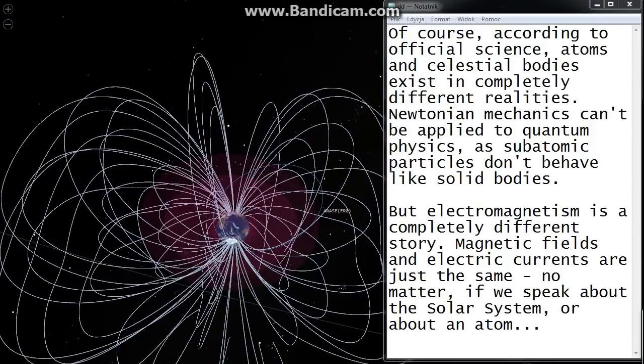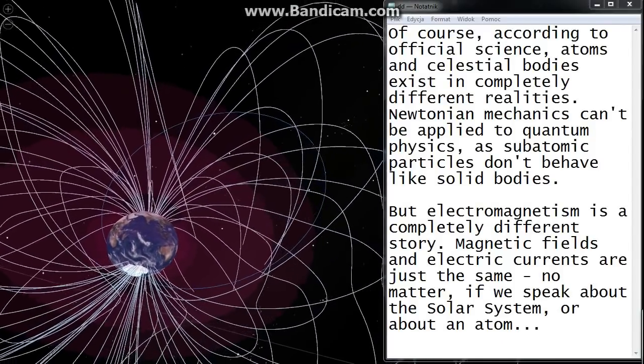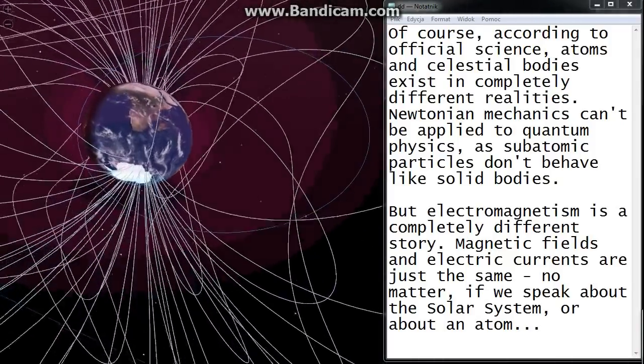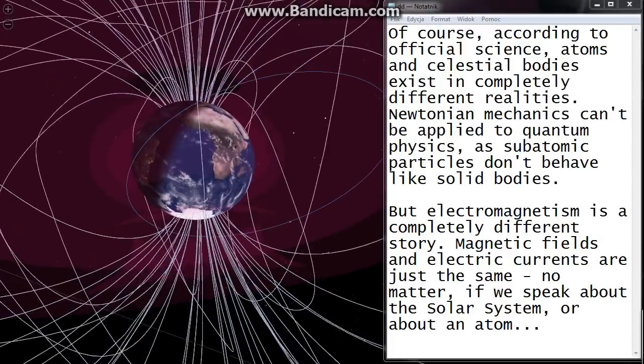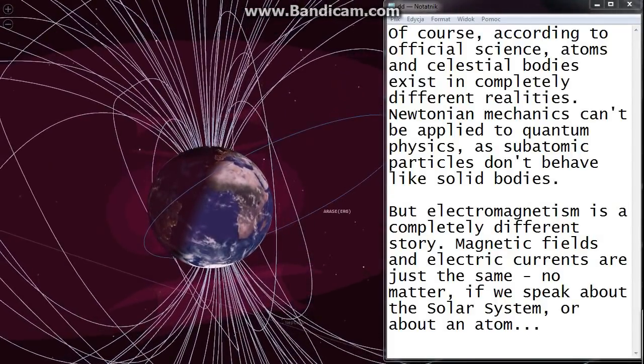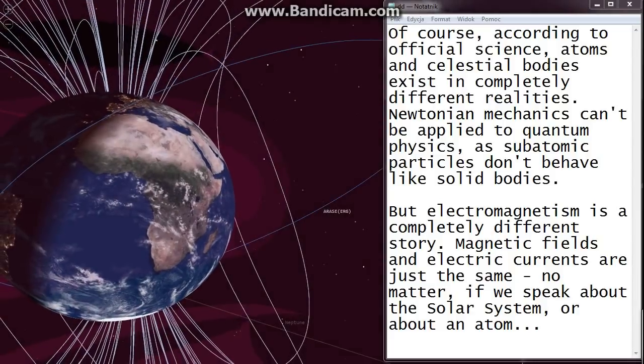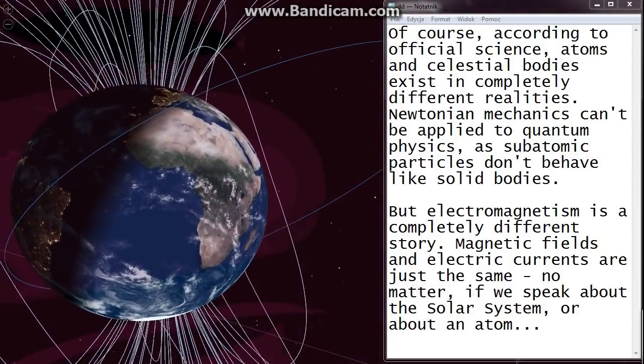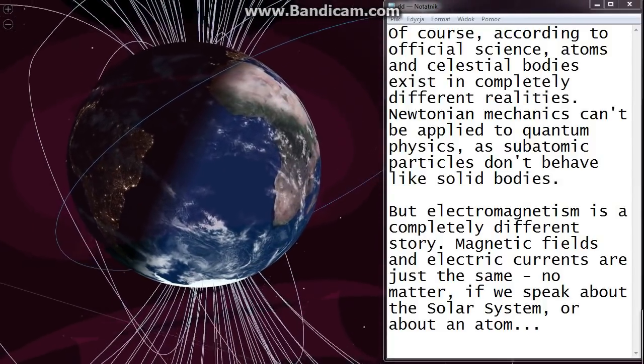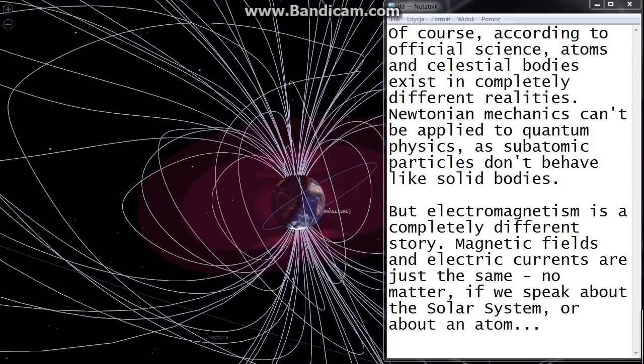Of course, according to official science, atoms and celestial bodies exist in completely different realities. Newtonian mechanics can't be applied to quantum physics, as subatomic particles don't behave like solid bodies. But electromagnetism is a completely different story. Magnetic fields and electric currents are just the same, no matter if we speak about the solar system or about an atom.